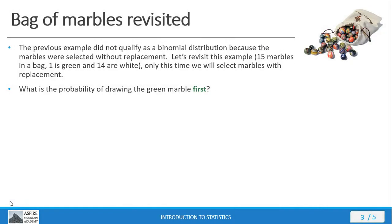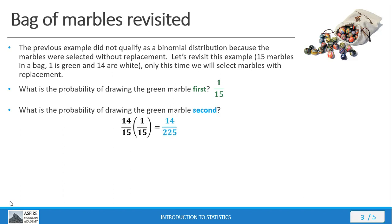Now let's switch it up a bit — same bag, same marbles, but now we're going to select them with replacement. Each marble we take out, we put back in the bag. The probability of drawing the green marble first remains 1/15. But the probability of drawing the green marble second changes because we're sampling with replacement. When we put that first marble back, there are 15 marbles total again. So when we multiply through, we get 14/225.